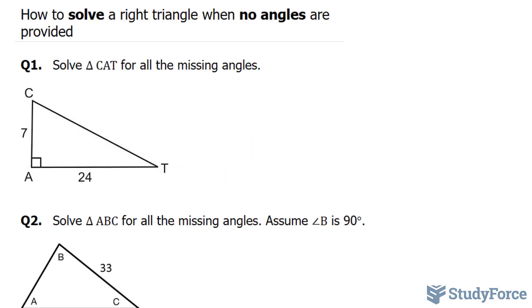In this video, I'll show you two examples on how to solve a right triangle when no angles are provided. The first question asks, solve the triangle CAT for all the missing angles.